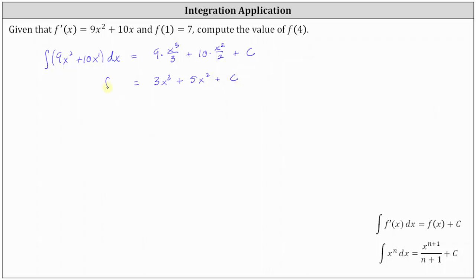So now we know f(x) = 3x³ + 5x² + c, and now we can determine the value of c because we know f(1) = 7.